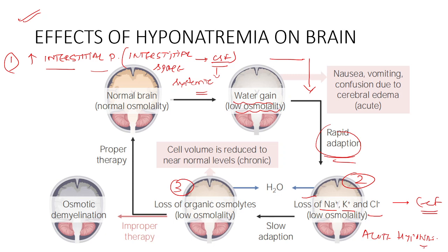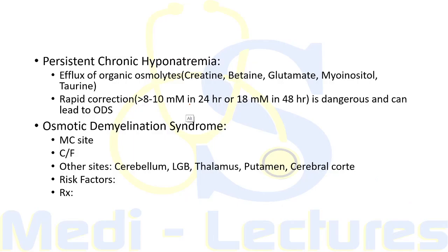The third step, occurring after 48 hours, is slow adaptation involving loss of organic osmolytes of low osmolarity from the intracellular compartment to the ECF. Improper therapy — that is, rapid correction of sodium — during this step can lead to osmotic demyelination syndrome. Proper therapy with slow correction leads to a normal brain with normal osmolality.